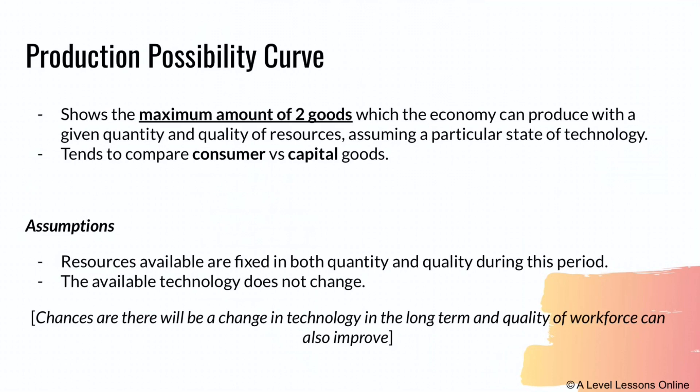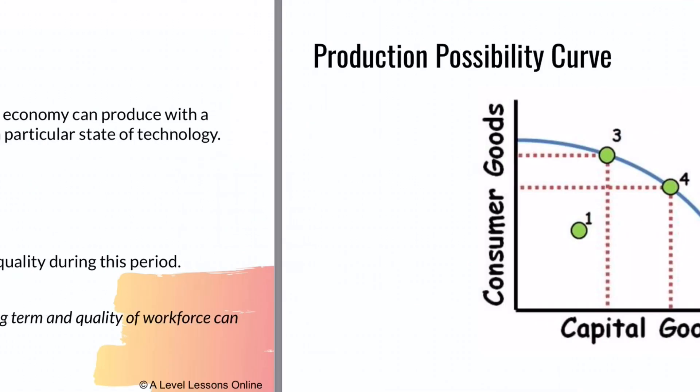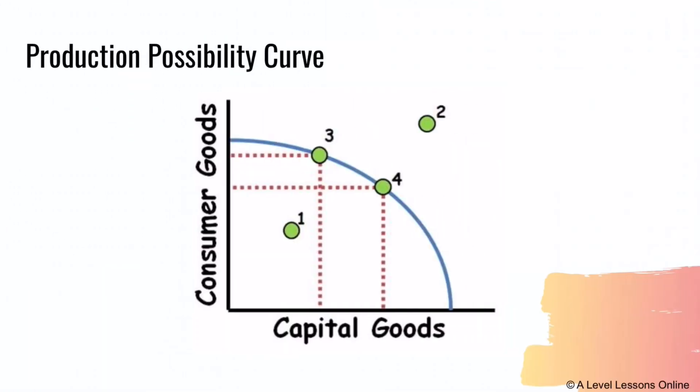Skills upgrading programmes and talent upgrading could increase the quality of the workforce, meaning the PPC may not fully rely on these assumptions — they may cause the PPC to be skewed or biased. The PPC shows consumer goods versus capital goods on its axes; you can always swap the axes and it doesn't make a difference. There are three main points to focus on.